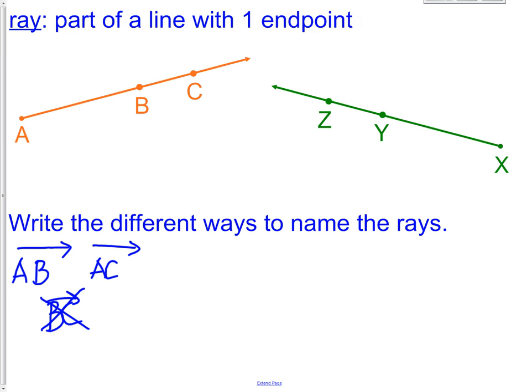So we always use the starting point and then one other point in the direction of the ray. Go ahead and try and write the ways that you could name the green ray. Pause it for a moment, write your answers down, and then restart the video.